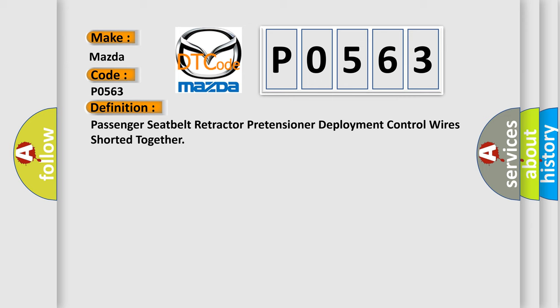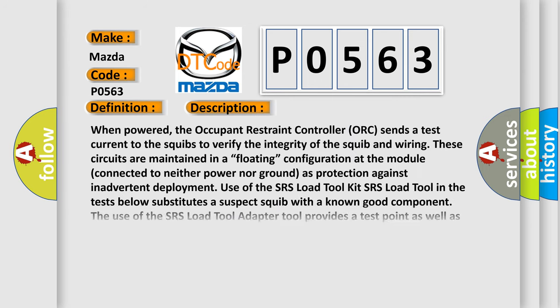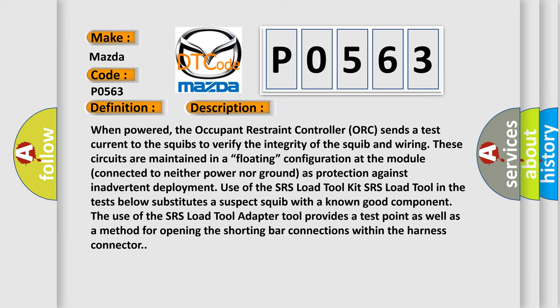Here is a short description of this DTC code. When powered, the occupant restraint controller (ORC) sends a test current to the squibs to verify the integrity of the squib and wiring. These circuits are maintained in a floating configuration at the module, connected to neither power nor ground, as protection against inadvertent deployment. Use of the SRS load tool kit — the SRS load tool in the tests below substitutes a suspect squib with a known good component. The SRS load tool adapter tool provides a test point as well as a method for opening the shorting bar connections within the harness connector.